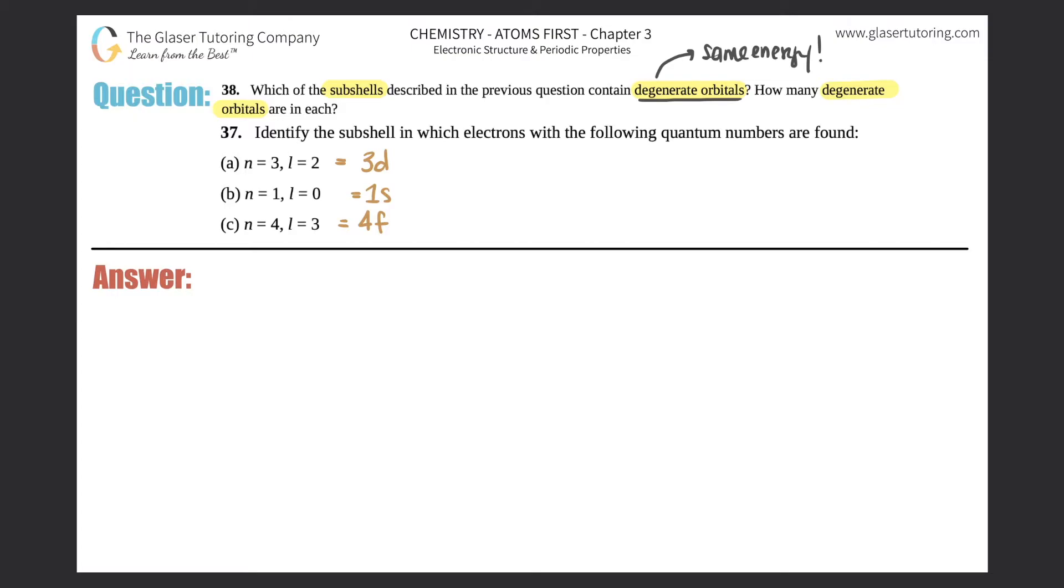However, they are different in orientation - that's what makes them different. So the orbitals come from different orientation, different ways of looking at them, but their energy values would be equivalent.